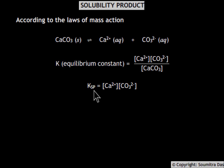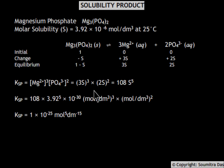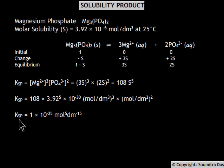A calculation of the solubility product of a more complex salt will clear up the matter. Take for example magnesium phosphate, whose molar solubility S is equal to 3.92 × 10⁻⁶ moles per decimetre cube at 25°C. Just as in the equilibrium constant expression where concentrations are raised to the power of their stoichiometric coefficients, the same applies here. Therefore, Ksp = 1 × 10⁻²⁵, and this is the unit of solubility product in this case.